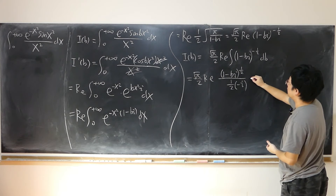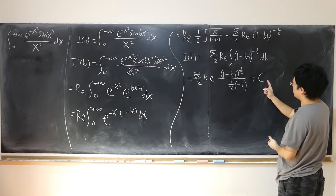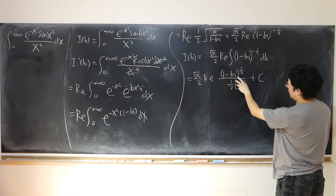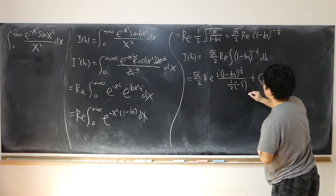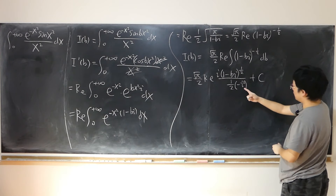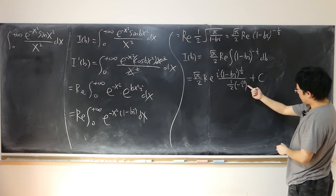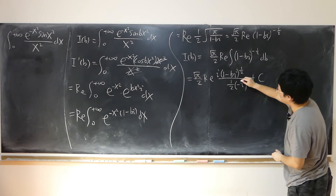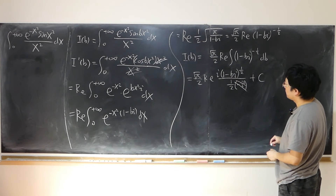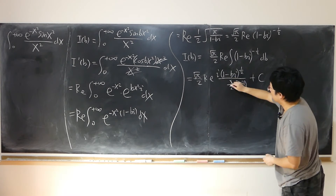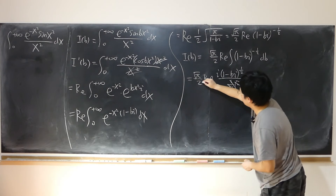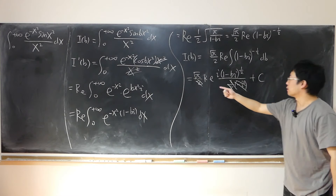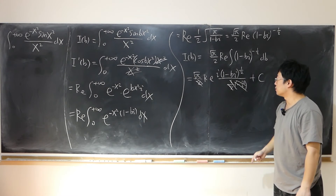Of course, we add the constant C, which we'll determine. To simplify, we multiply by i on both top and bottom: negative i squared gives negative times negative 1, which is positive 1. So combining the half factors, I(b) equals the real part of (√π / 2) times i times (1 minus bi) to the power of one-half, plus C.